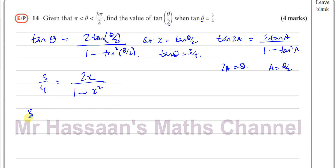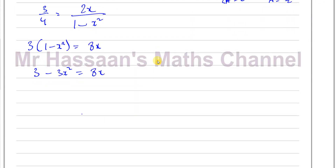Cross-multiplying, I have 3(1 − x²) = 4·(2x) = 8x. Expanding the bracket: 3 − 3x² = 8x. Now I have a quadratic equation. Bringing everything to one side by adding 3x² and subtracting 3 from both sides gives: 3x² + 8x − 3 = 0.